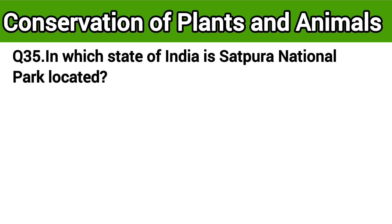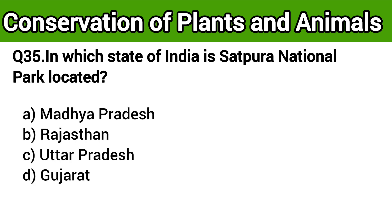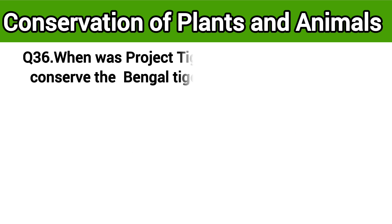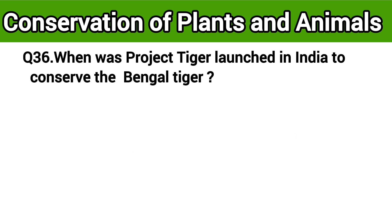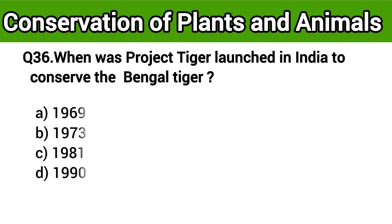Question number 35: In which state of India is Satpura National Park located? The right answer is option A: Madhya Pradesh. Question number 36: When was Project Tiger launched in India to conserve the Bengal tiger? The right answer is option B: 1973.